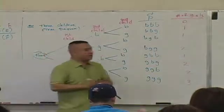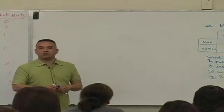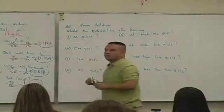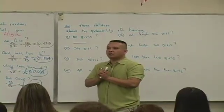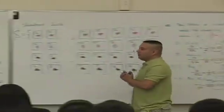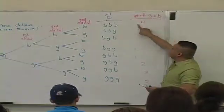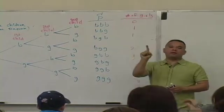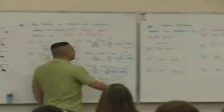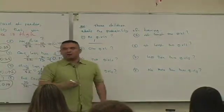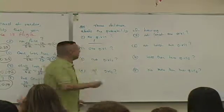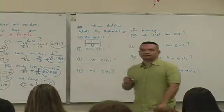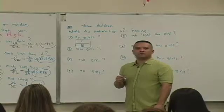I'm going to answer these probability questions. If you look at this question over here, what's the likelihood of having no girls? How many outcomes consist of having zero girls? One — the BBB outcome. So the answer is one over how many outcomes are in that sample space? Count them. The answer is one-eighth.